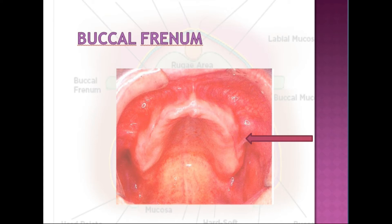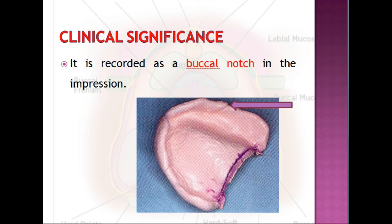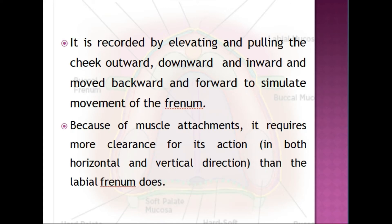The buccal frenum is related to three muscles: the levator anguli oris, orbicularis oris, and the buccinator. The levator anguli oris is attached beneath the frenum and affects its position; orbicularis oris pulls it forward and buccinator pulls it backward. It is recorded as a buccal notch in the impression by elevating and pulling the cheek outward, downward, inward, and forward and backward to simulate the movements of the frenum. It requires more clearance for its action than the labial frenum and is crescentic in form.